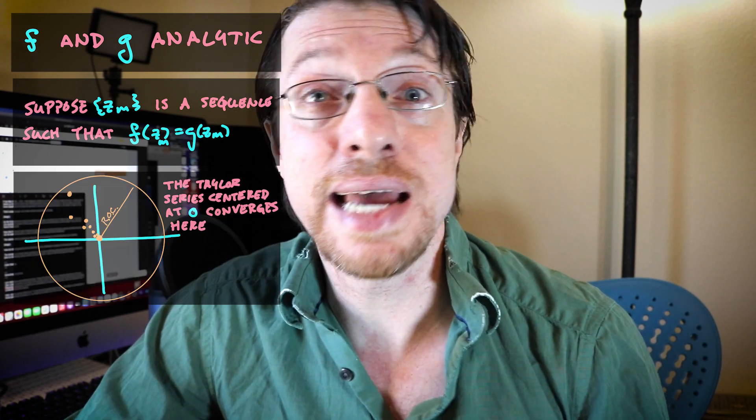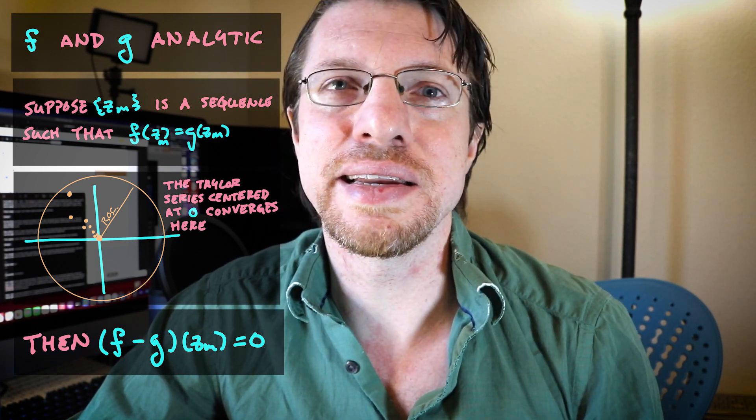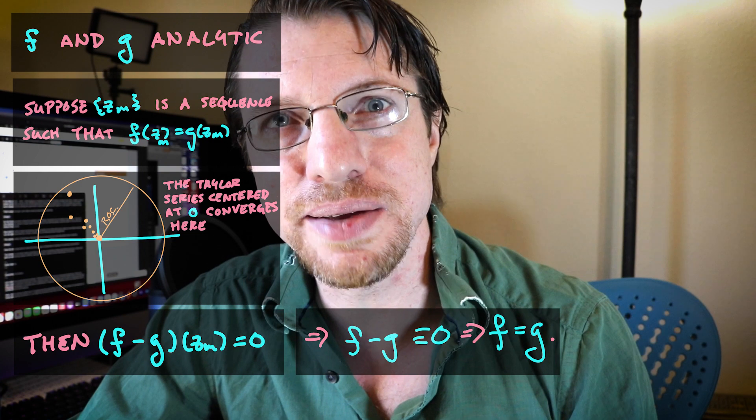The answer is really simple. If you have two functions, say F and G, both analytic functions, and they have an accumulation point of places where they agree — so you have a sequence Z_n where F(Z_n) equals G(Z_n) — and that sequence converges inside of their radius of convergence, then F minus G is another analytic function that vanishes along the sequence. Since it vanishes along a sequence converging inside of its radius of convergence, F minus G must be identically zero, and thus F must be equal to G for all Z. That's why it's called the Identity Theorem.